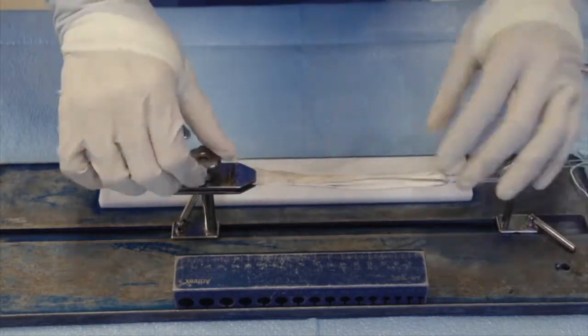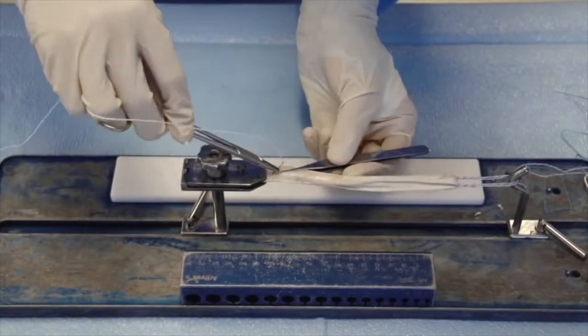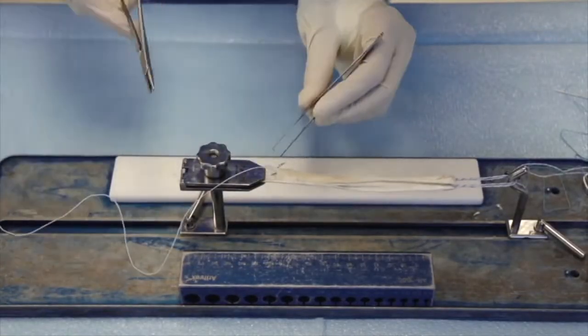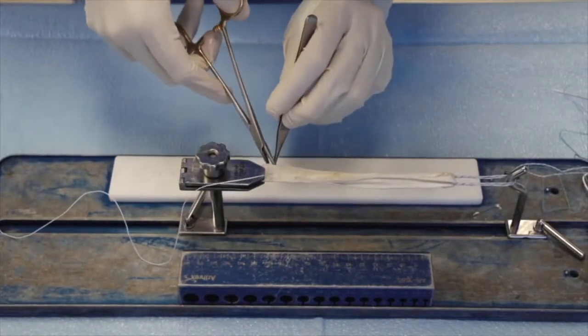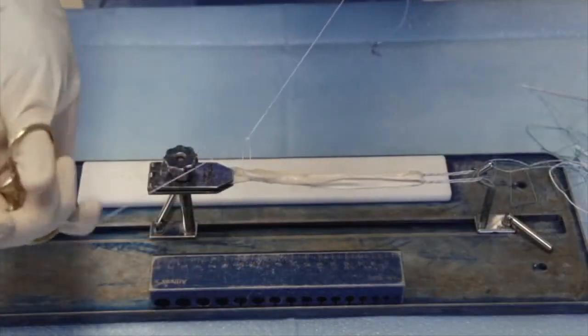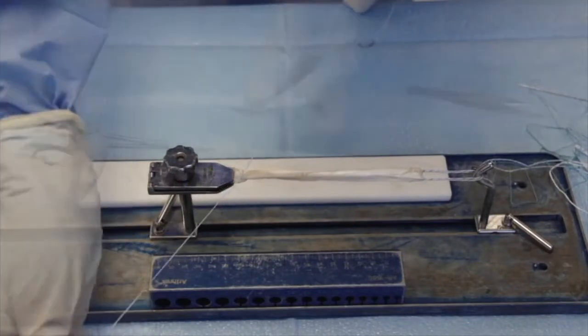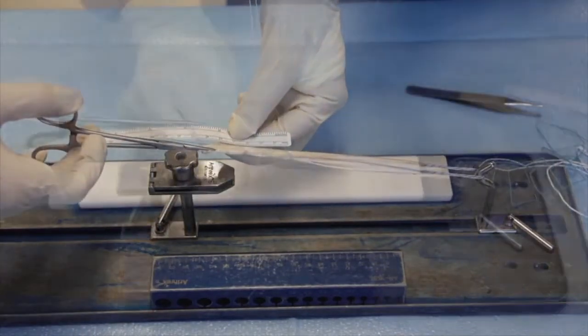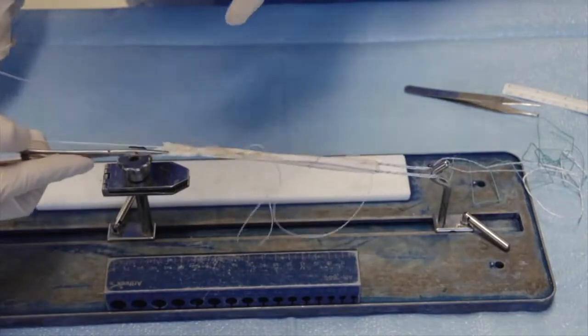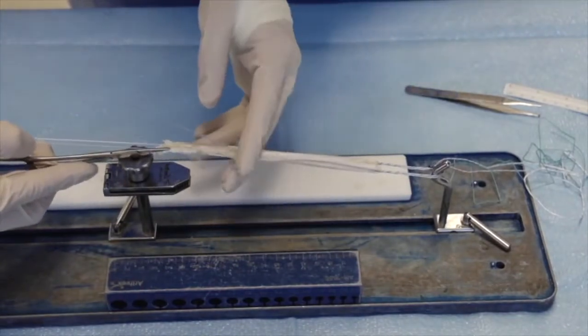The tendon is loaded into a suspensory device. The two free ends of the graft are stitched together with non-absorbable suture to create equal lengths of each hearth. The graft is then whip stitched with fiber loop at the end to reinforce it.